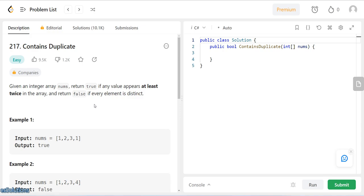Hello, welcome to today's video. Today we'll be looking at LeetCode question 217 contains duplicate. It's a very simple algorithm and I don't think we will take too much time on this.